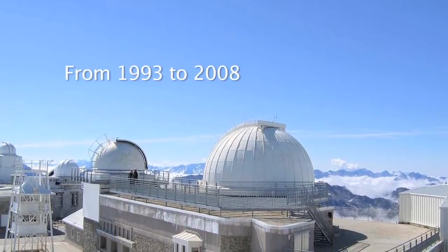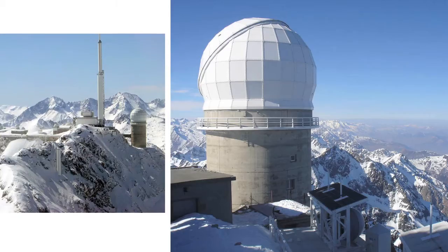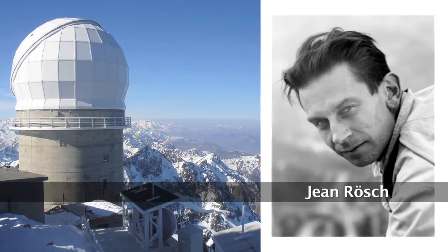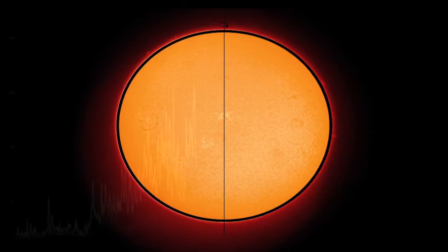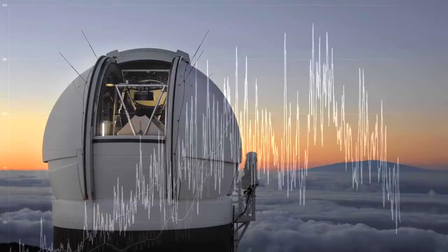From 1993 to 2008, measures are regularly made at the Pic du Midi Observatory in France by Jean Rösch and his students. They will show a very slight variability of the oblateness with the solar cycle.